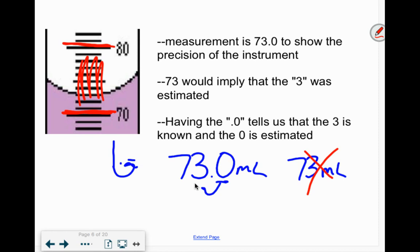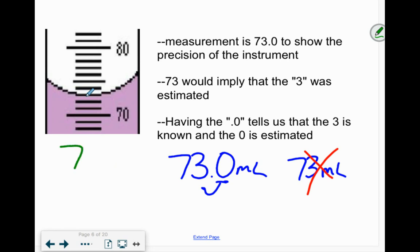Just make sure you add the .0 if you think you need to. If somebody else said 'I think it was a little above the three' and said 73.2 milliliters, that's fine — our eyes are a little different. I will never mark anything wrong if it's pretty close, as long as you have a unit, the correct number of placement markers, and you're reasonably close to the right decimal.